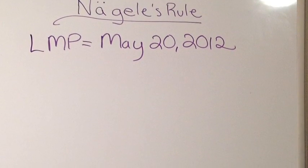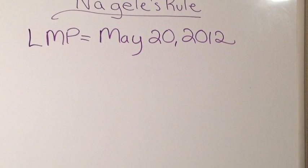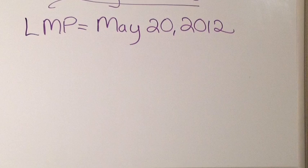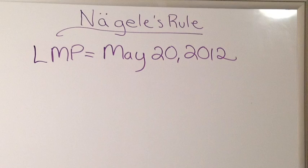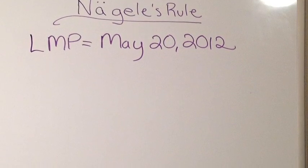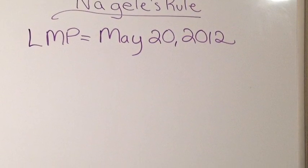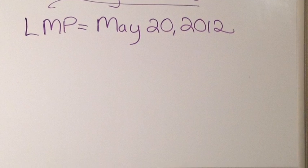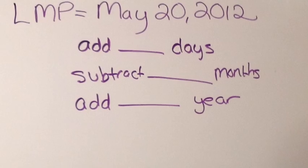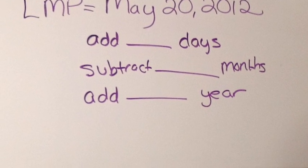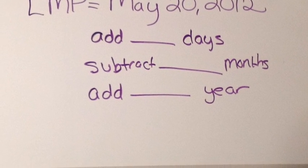If you get a problem like this on NCLEX, don't worry. You'll always be given the last menstrual period. Our last menstrual period here is May 20, 2012. Now here comes the math — how many days do you add? What about months and years?